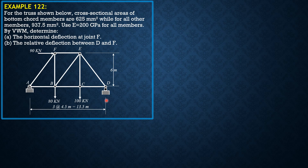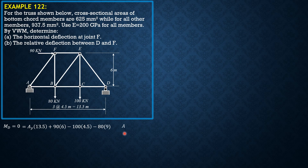We solve for the reactions. Summation of moments about D equals 0: Ay times 13.5 plus 90 times 6, minus 100 times 4.5, minus 80 times 9 equals 0. So Ay equals 140 over 3 kilonewtons. Reactions at A: 90 to the left and 140 over 3 upward. Summation of forces Y verifies that.